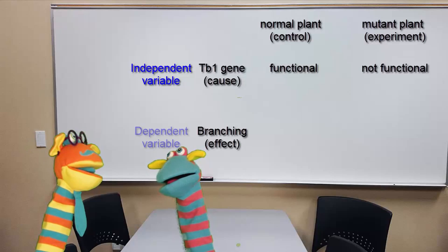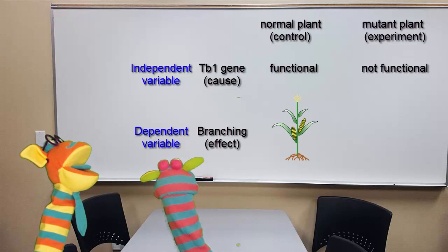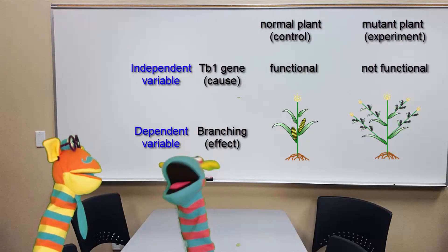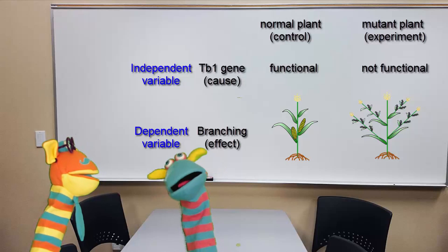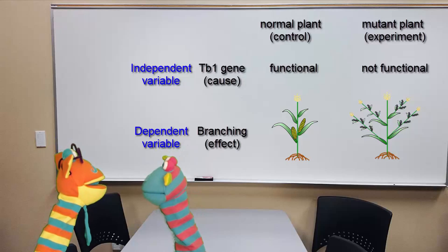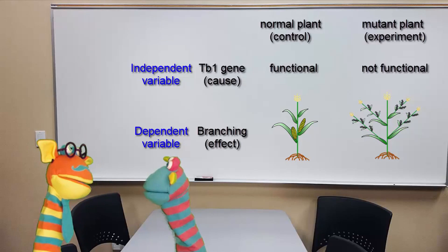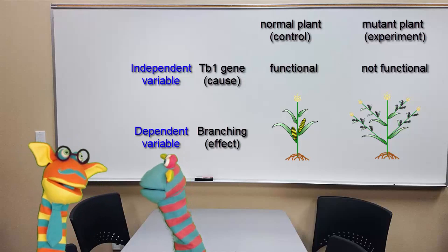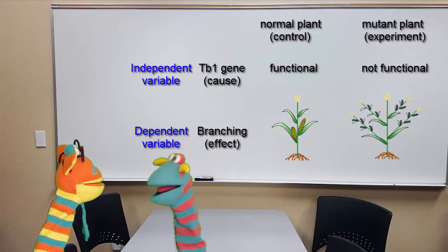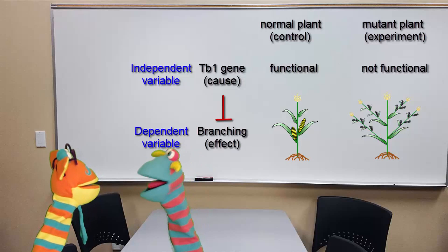Now let's look at what happens to the potential effect, or the so-called dependent variable. We already know that maize plants have fewer branches. Now let's look at the mutant. There are a lot more branches in the mutant. I'm a little confused — if the function of TB1 is to promote branching, wouldn't I see less branching if I take it away? Maybe its function is not to promote branching. What would make more sense? Well, it makes more sense if TB1 inhibits branching. When I take it away, I would see more branching.